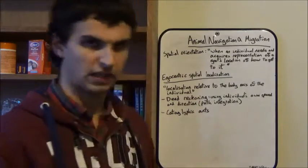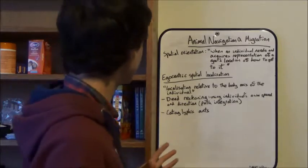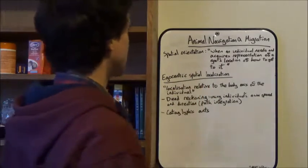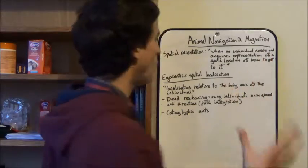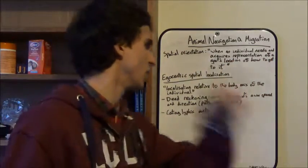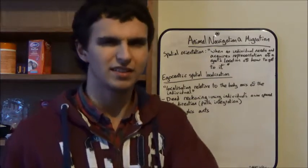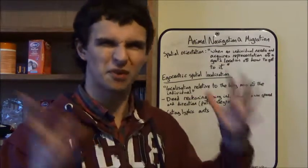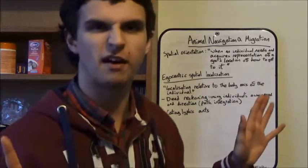Now, we like a good definition to start off with, and here's the first one. So, spatial orientation is when an individual needs and acquires representation of a goal's location of how to get to it, right? Sounds like a bit of a mouthful, but when you read it through, it's quite obvious.